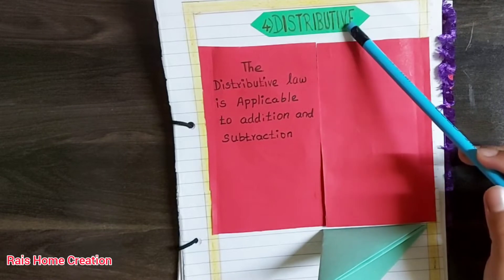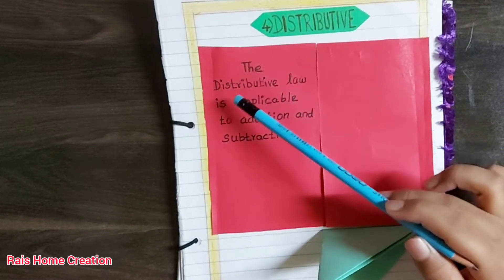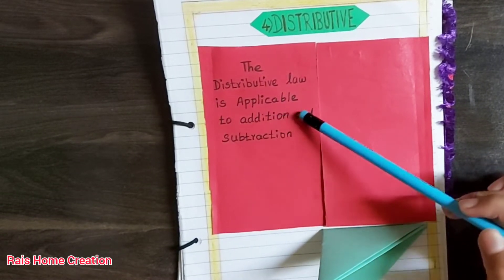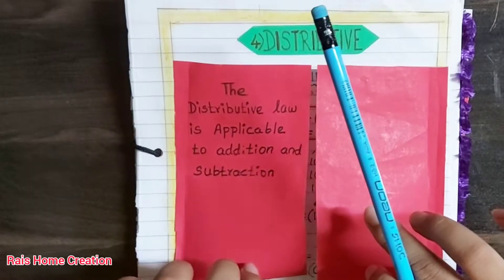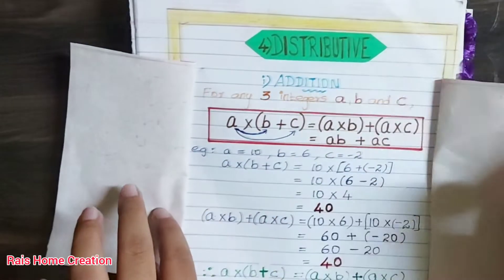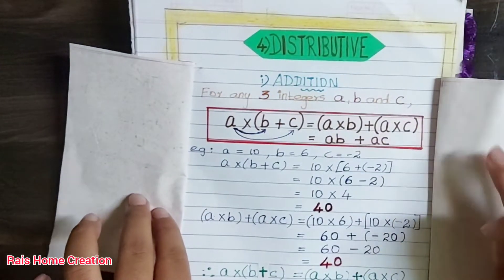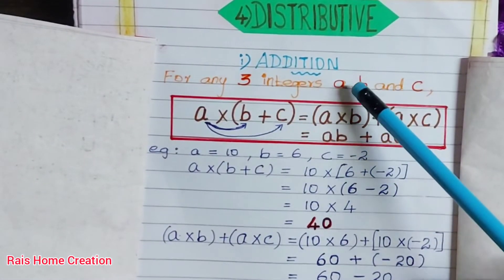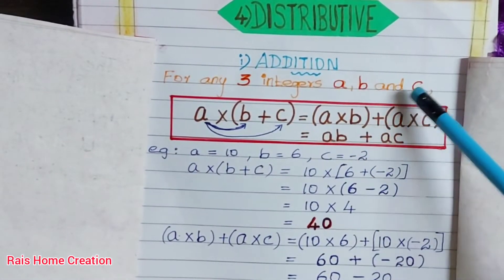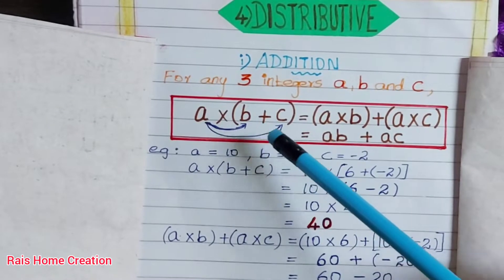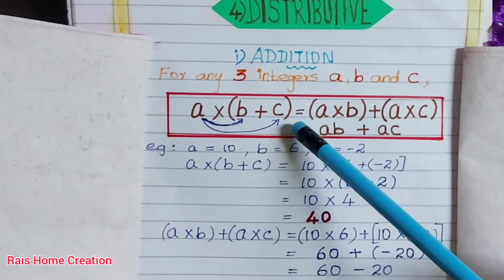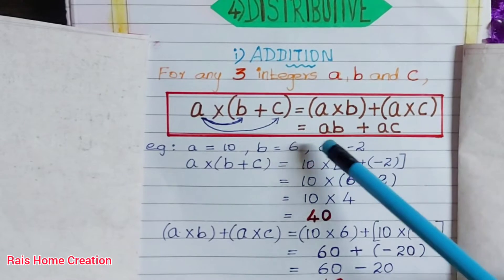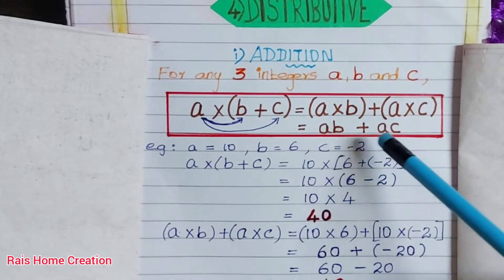Distributive Property. The distributive law is applicable to addition and subtraction. For addition, for any three integers a, b and c: a into (b plus c) equals a into b plus a into c, which equals ab plus ac.